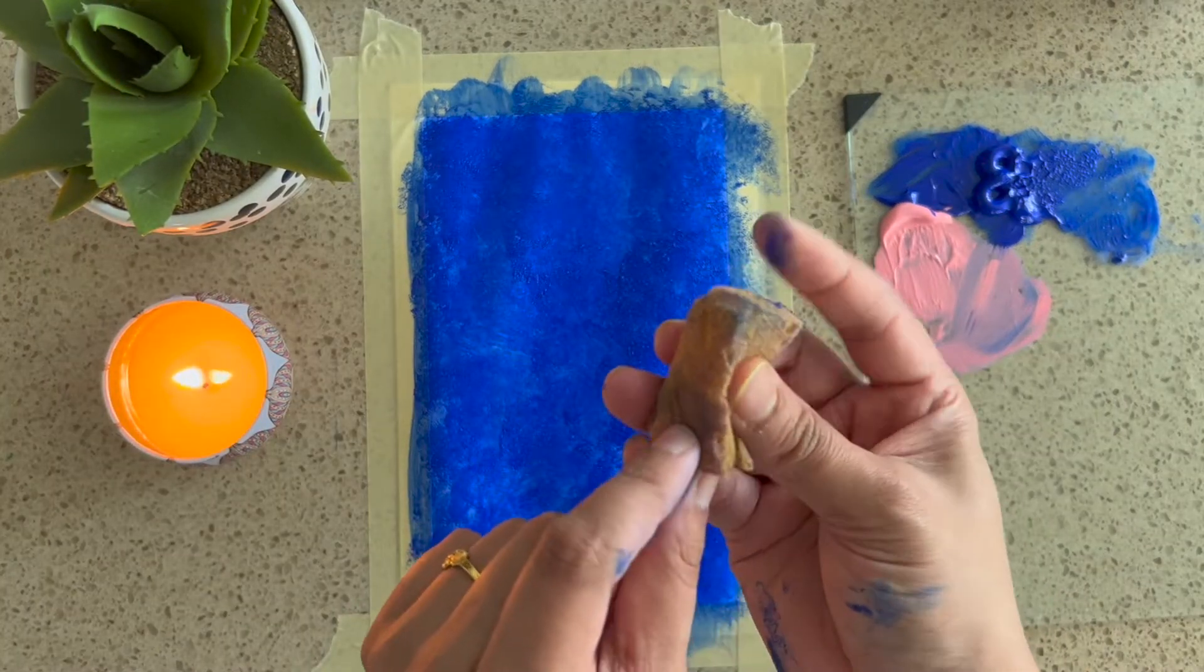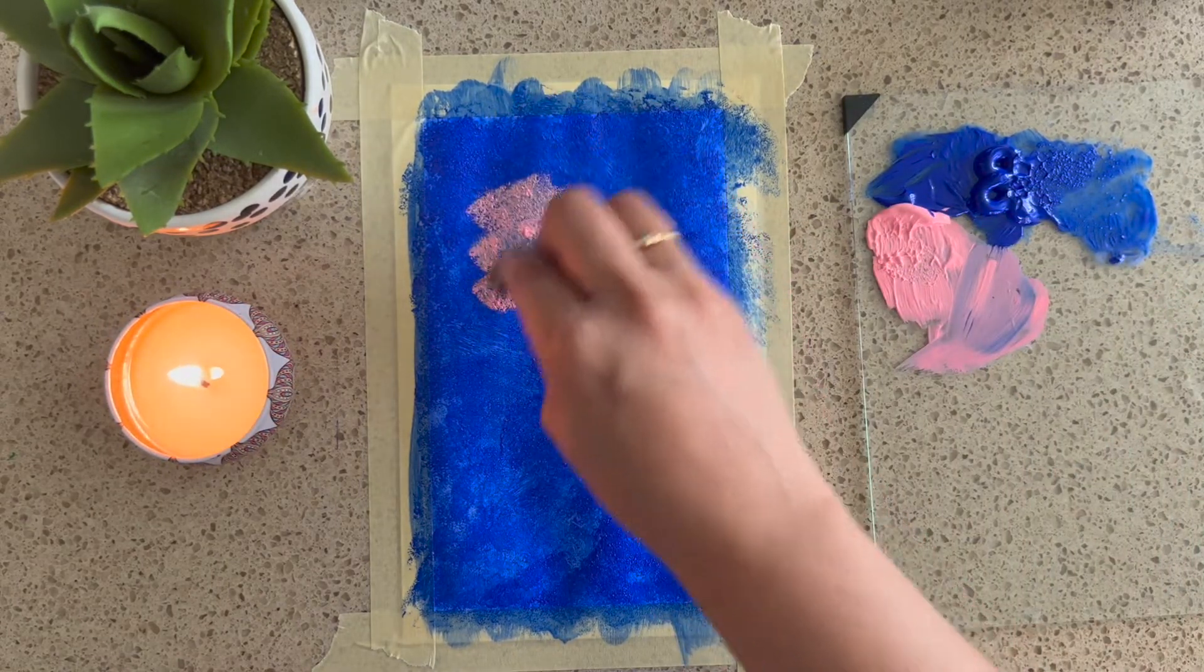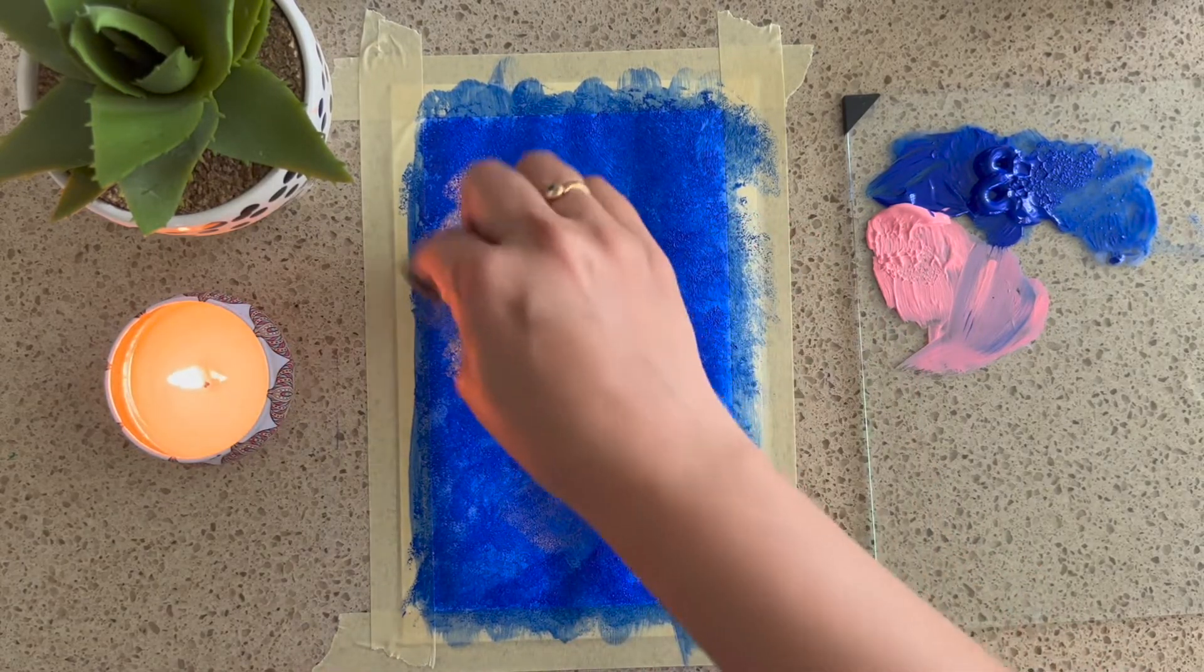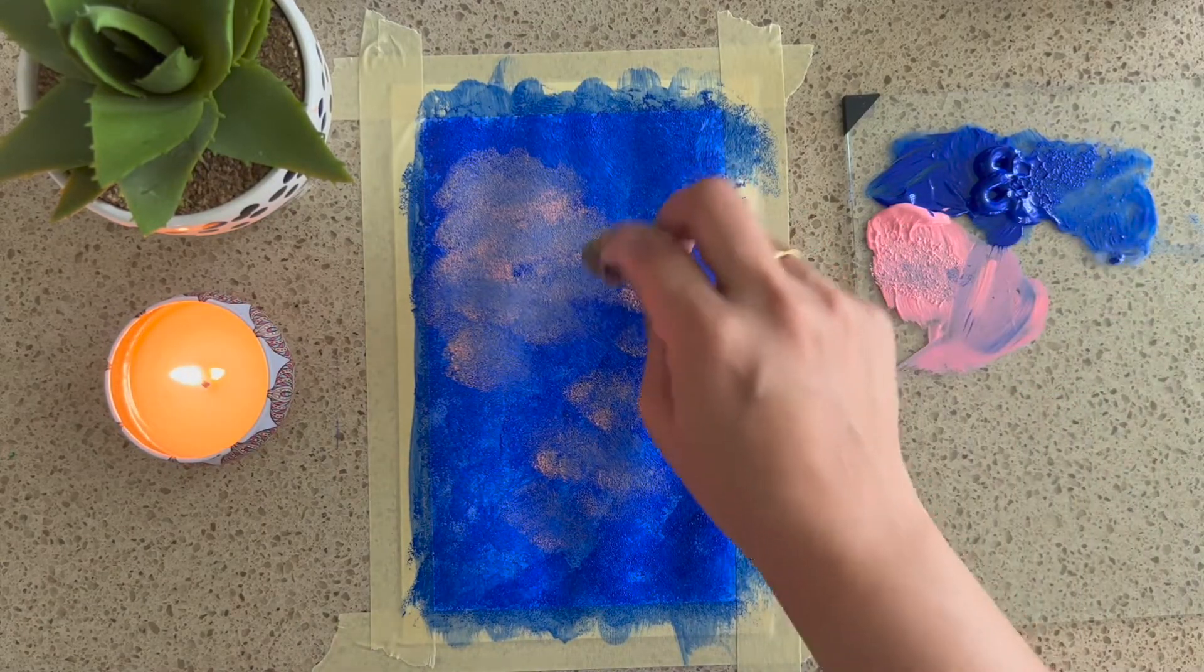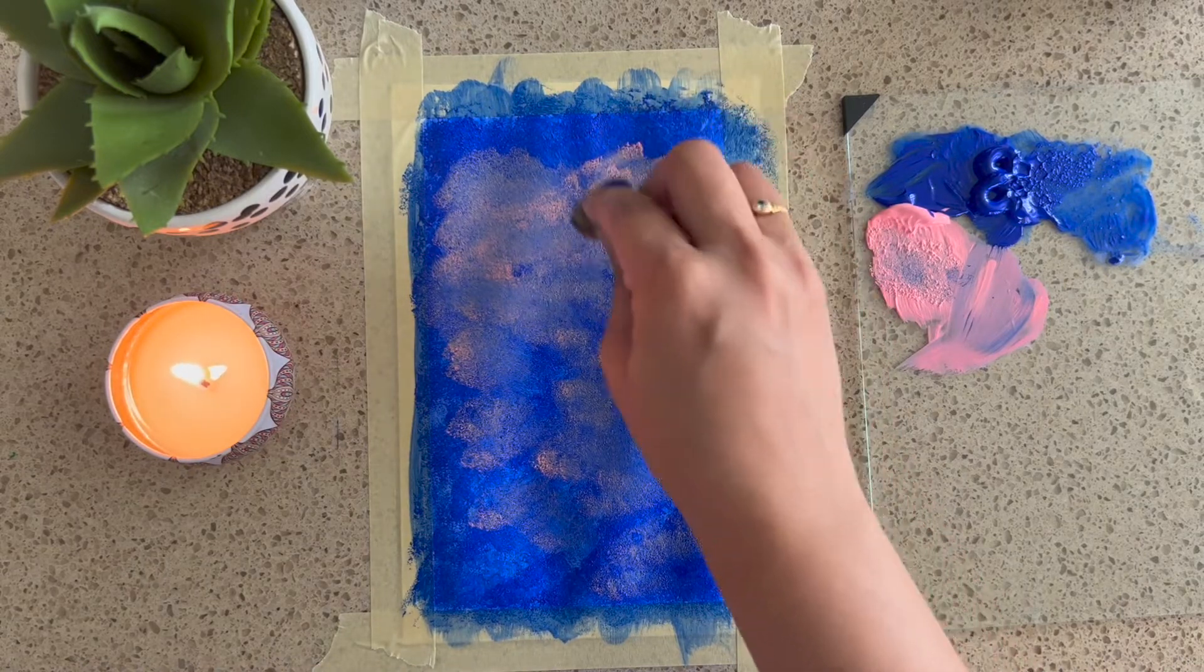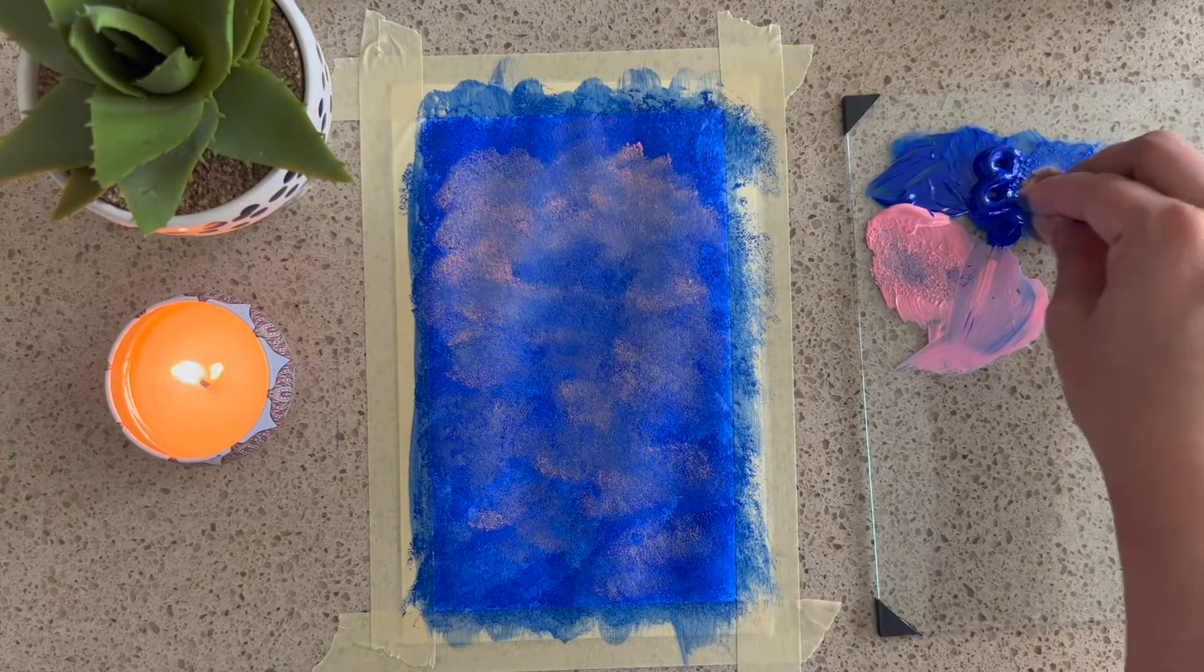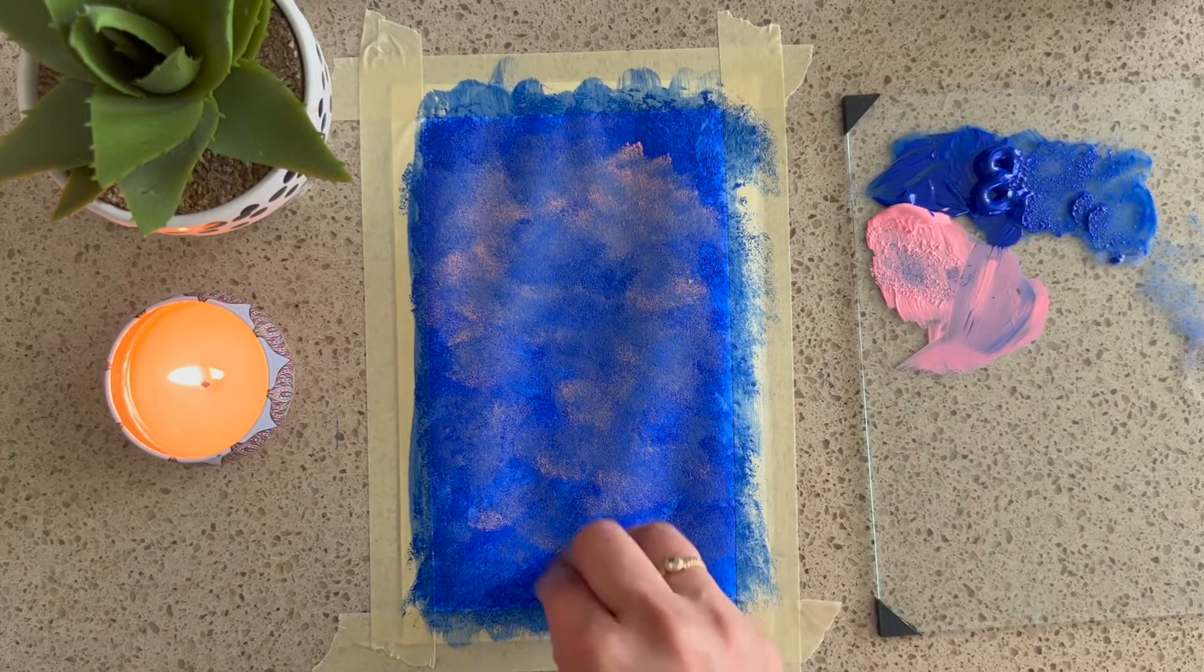I am using the other side of the sponge for the next color so that the color won't get mixed. You can follow the process till you get the desired background.